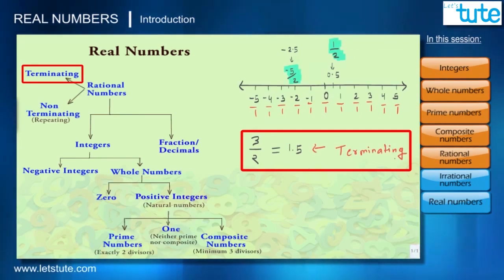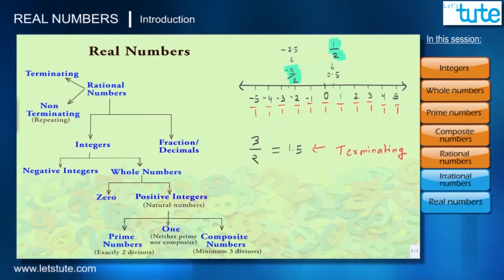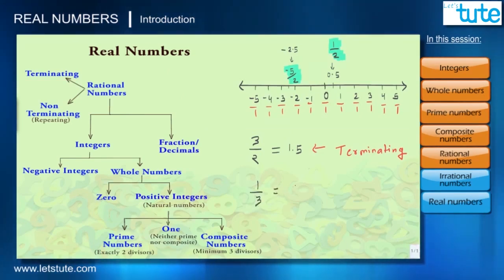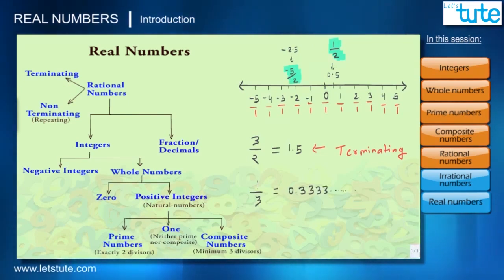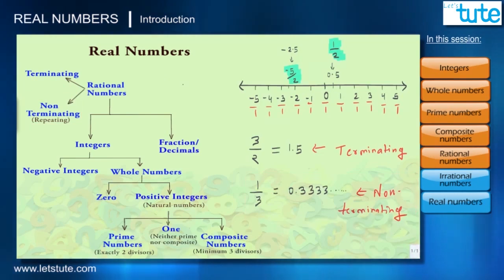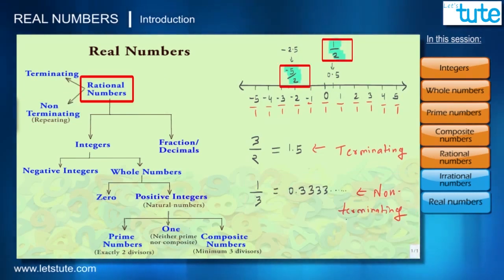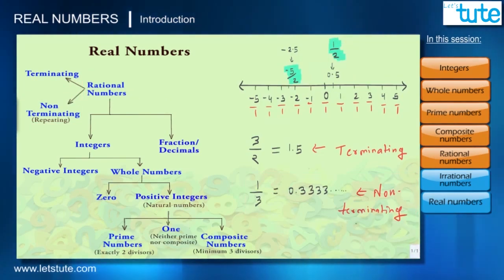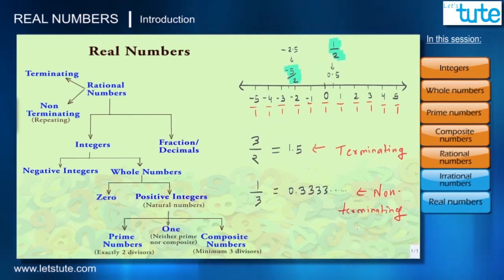Whereas 1/3 is also a rational number, and the decimal form of 1/3 is 0.333... going on forever with repetition of the digit 3. This is a non-terminating decimal form. So this was all about rational numbers, which can be expressed as a ratio of integers. But there are also some numbers which can't be written as a ratio of integers.